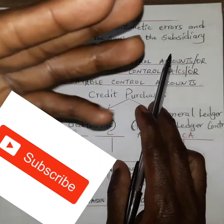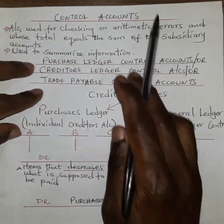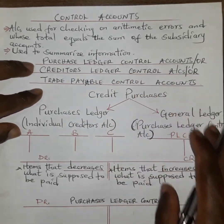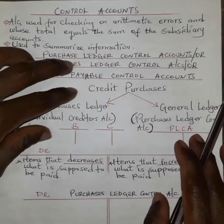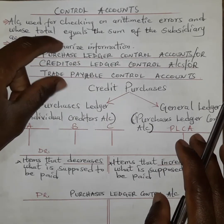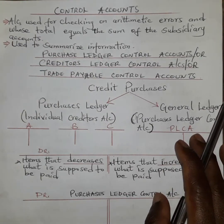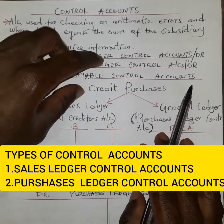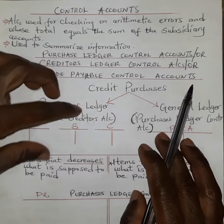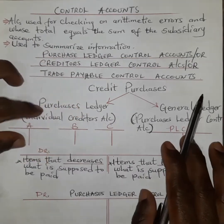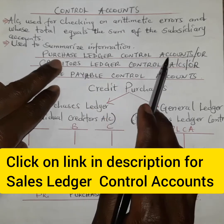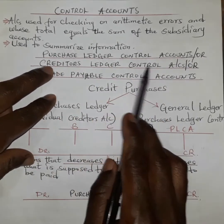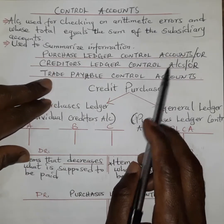Normally you have two types of control account: the purchases ledger control account and the sales ledger control account. For this particular case, we are going to examine the purchases ledger control account. For the sales ledger control account, you can click on the link in the description below to understand more about that.